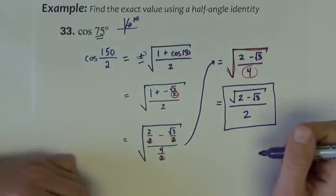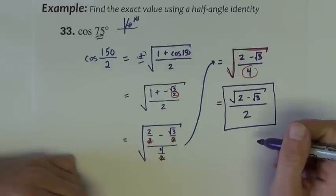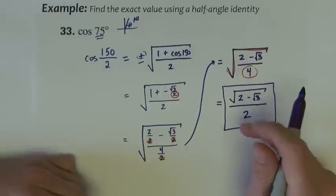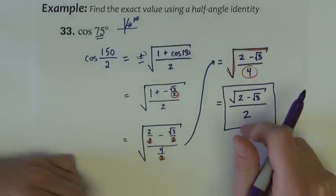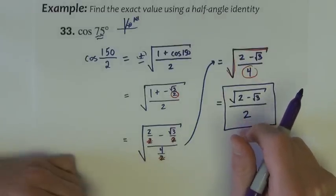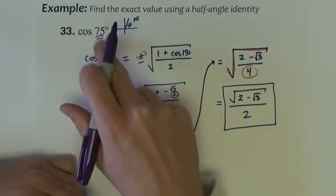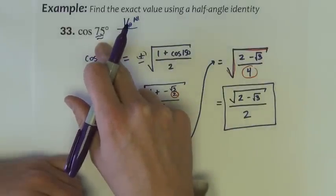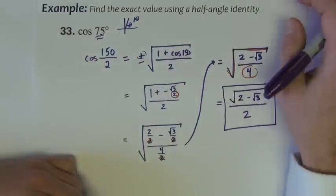That certainly looks like a different value than what we got with the sum and difference identity, but if you type this into the calculator correctly and hit enter, you'll get a decimal that is equivalent to the decimal of cosine of 75 degrees. I'll let you try that on your own if you want to.